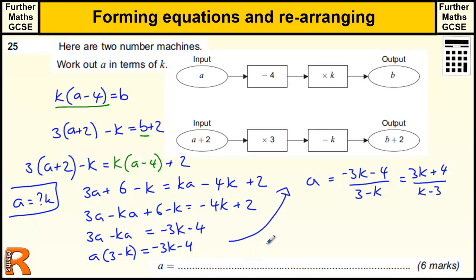And that's a much neater answer. But either of those two is fine. So minus 3k minus 4 over 3 minus k is what a is equal to, or that could be, or is the same as, 3k plus 4 over k minus 3. So long as we times the top and bottom by the same thing, we have the same fraction. So we can change all the signs by times-ing by minus 1.